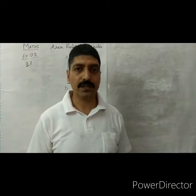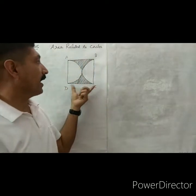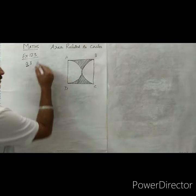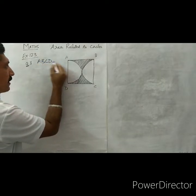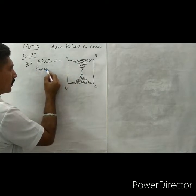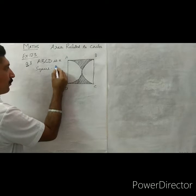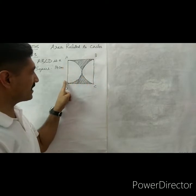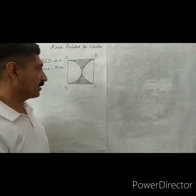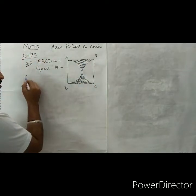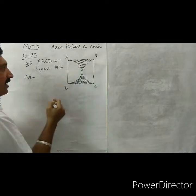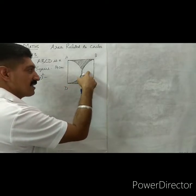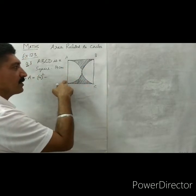In question 3, a square ABCD with side 14 centimeter is given. There are two semicircles — one with diameter AD and another with diameter BC. We have to find the shaded area. The shaded area is equal to the area of the square minus one semicircle plus another semicircle. Since the diameter is the same, the two semicircles together form one complete circle, so we subtract πr².